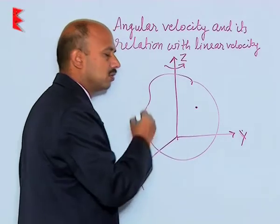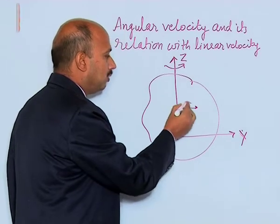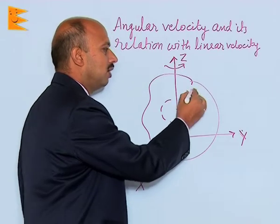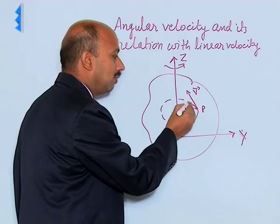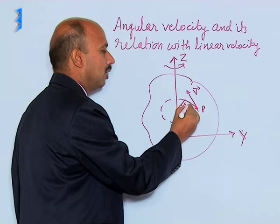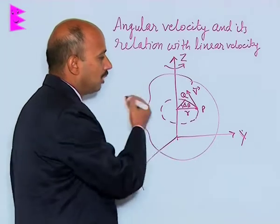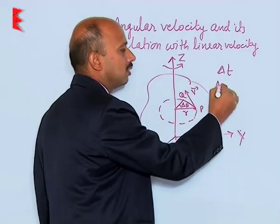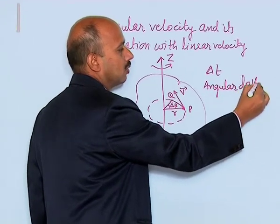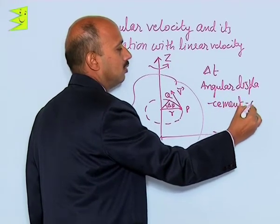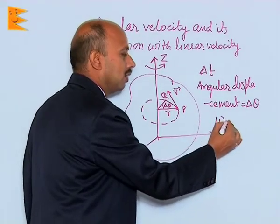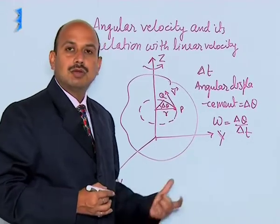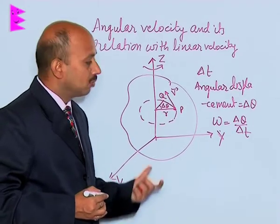Suppose you have taken a particle at a point which is at a distance r, moving in a circular path. At an instant, this particle P is at a point and its velocity is tangential. After a time interval delta-t, the particle reaches point Q, and this angle swept is delta-theta, with velocity remaining tangential. So in time interval delta-t, the angular displacement is delta-theta. Therefore, angular velocity omega equals delta-theta divided by delta-t — the time rate of change of angular displacement is known as angular velocity.